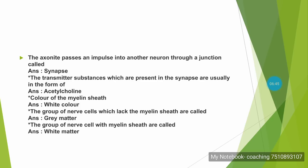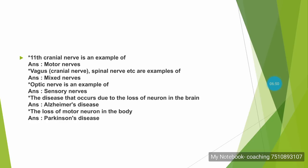The group of nerve cells with myelin sheath forms the white matter. The 11th cranial nerve is an example of a motor nerve.